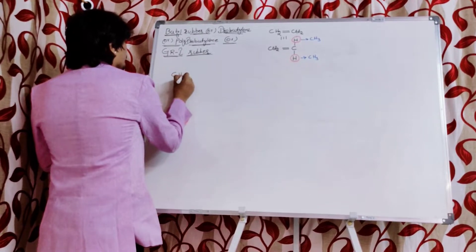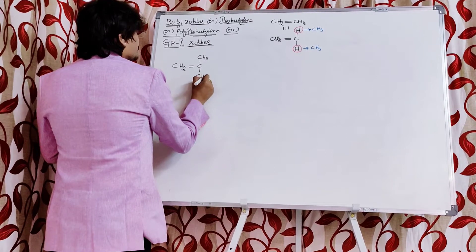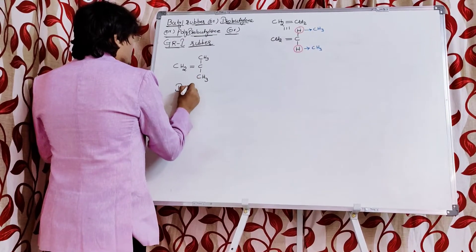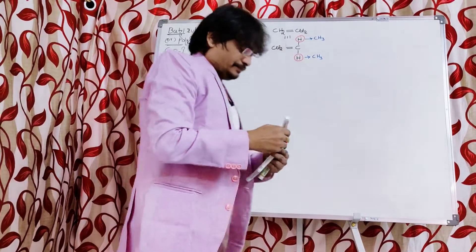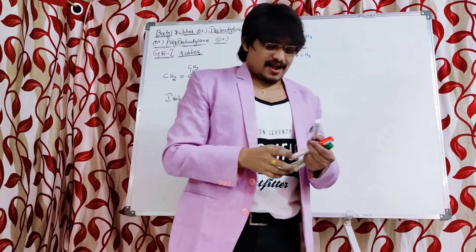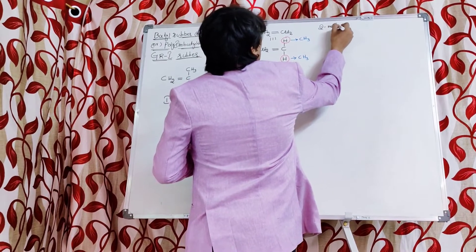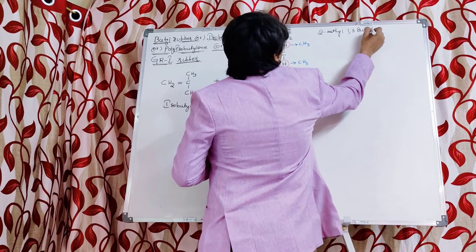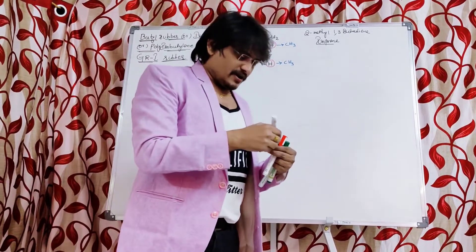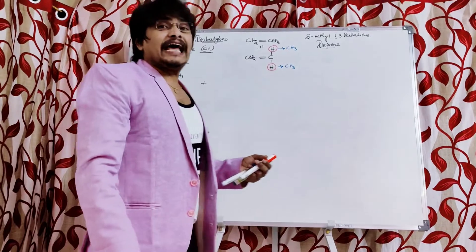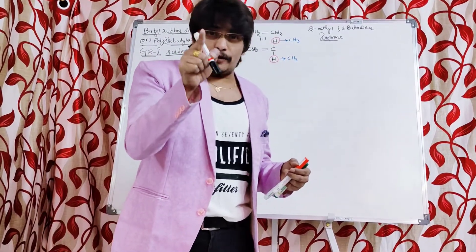The structure of isobutylene is CH₂=C(CH₃)₂. The other monomer is isoprene, which is nothing but 2-methyl-1,3-butadiene. Its quantity is just 0.25 to 0.5% only. We have to extract the structure from the name itself.